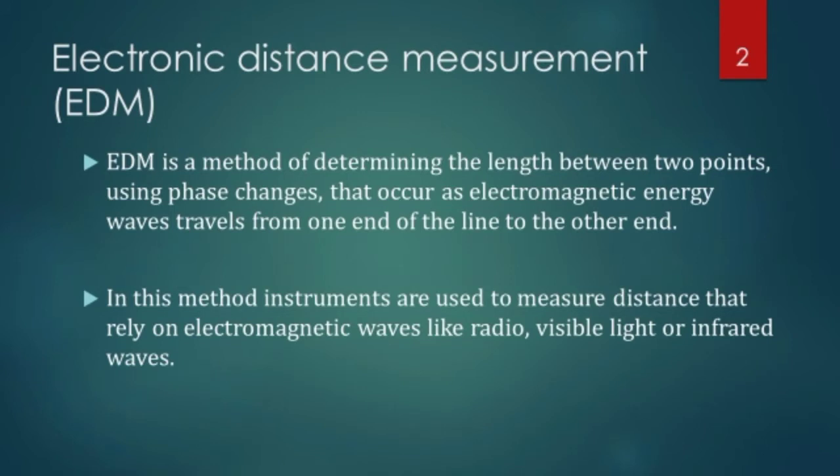EDM is a method of determining the length between two points using phase changes that occur as electromagnetic energy waves travel from one end of the line to other end. In this method instruments are used to measure distance that rely on electromagnetic waves like radio, visible light or infrared waves. This is the fundamental definition of EDM. Using phase changes, phase changes is minute variation of the point where it is reflected back, and using phase changes you can increase the precision of this calculation to any extent.